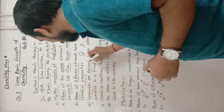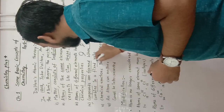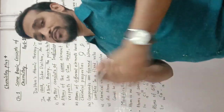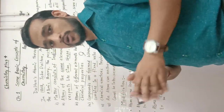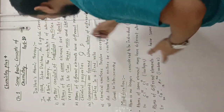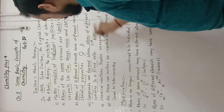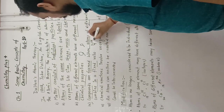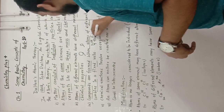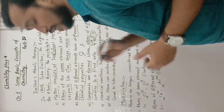The fourth postulate is: compounds are formed when atoms of different elements combine in a fixed ratio. Whenever atoms of different elements combine in a definite proportion or fixed ratio, we get different compounds. For example, ammonia (NH3) has one atom of nitrogen and three atoms of hydrogen combined in the ratio of 1:3.